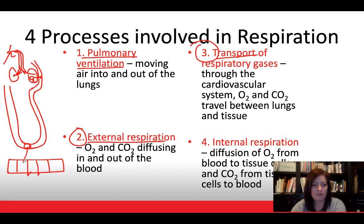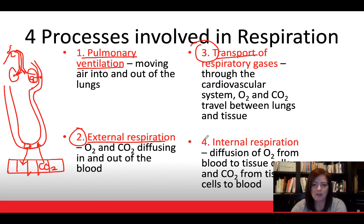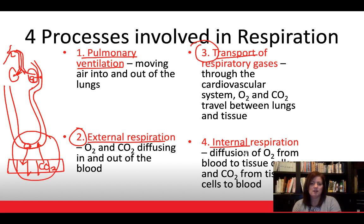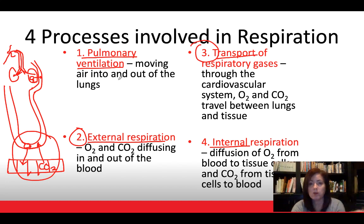Oxygen in the bloodstream travels into the tissues of the body by diffusion, and carbon dioxide given off as a metabolic waste product of the tissues diffuses back into the bloodstream. This is transportation of gases. The fourth process is internal respiration — the diffusion of oxygen and carbon dioxide between tissue cells and the blood. Those are our four processes.